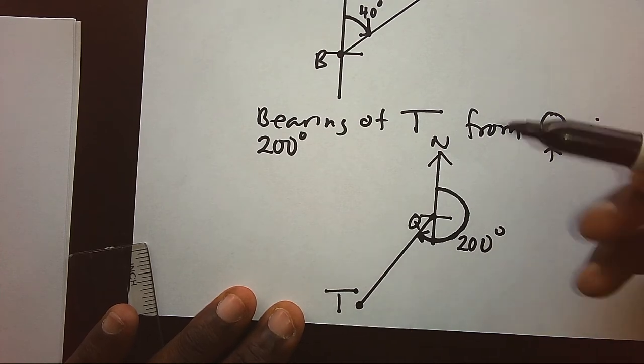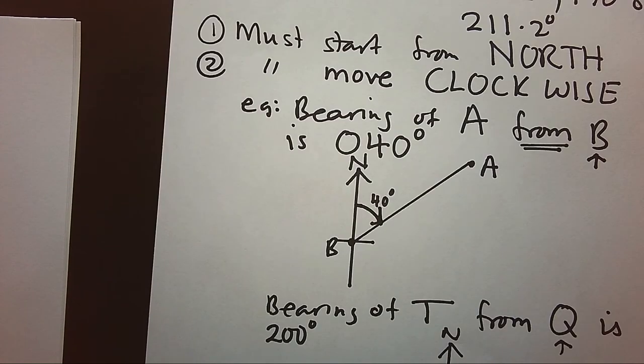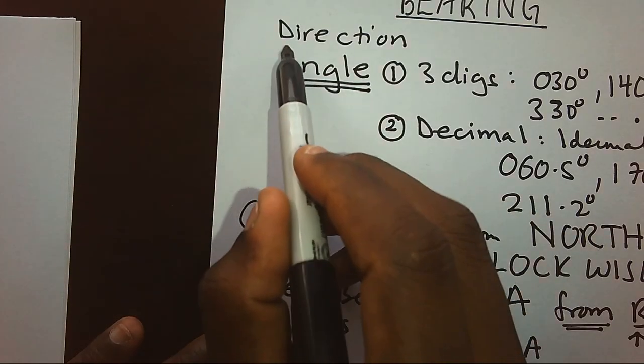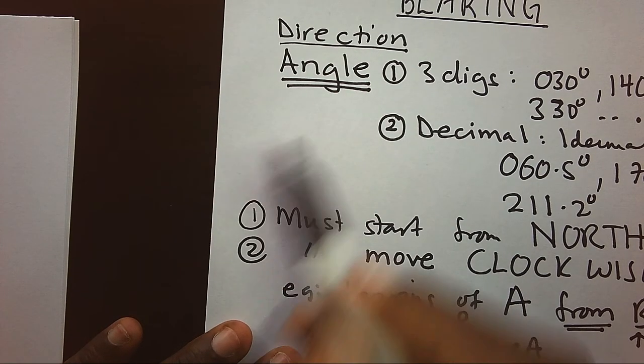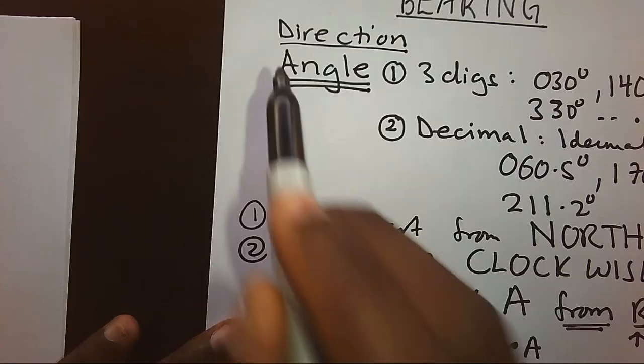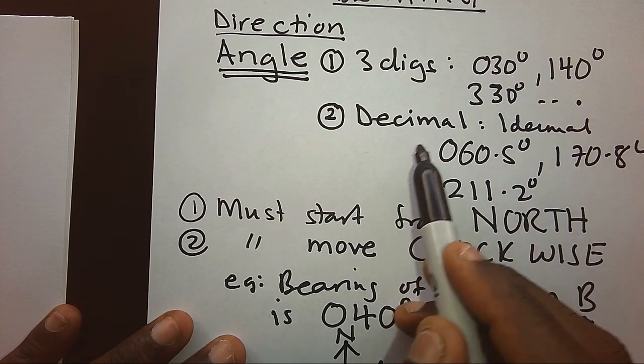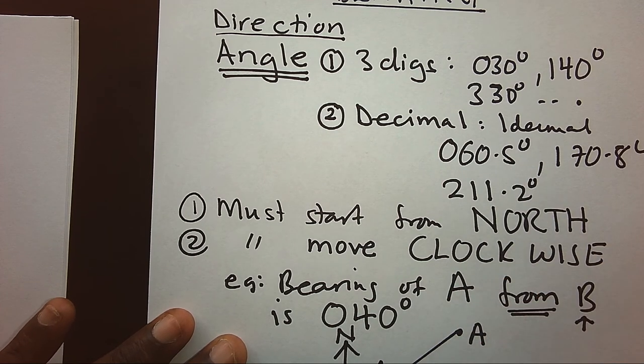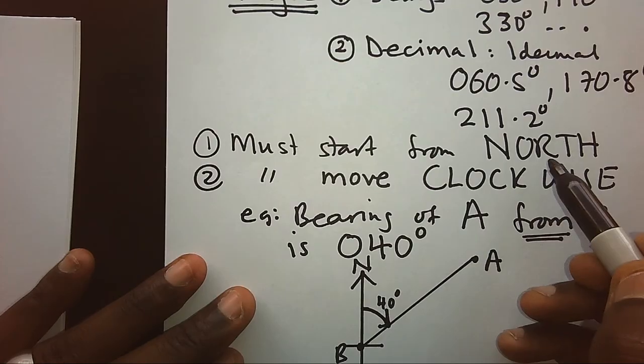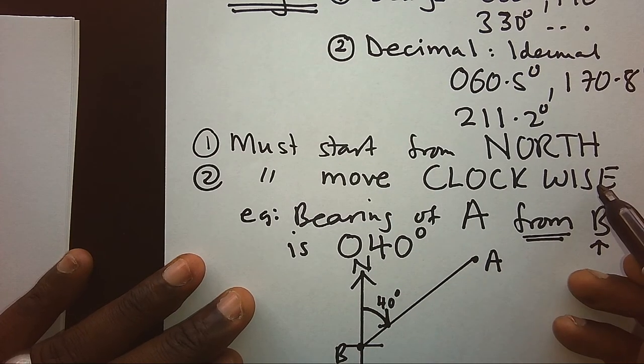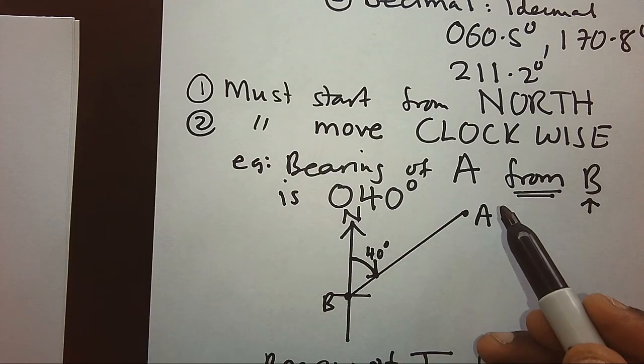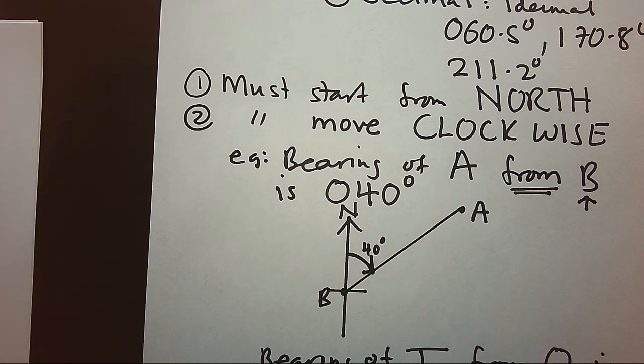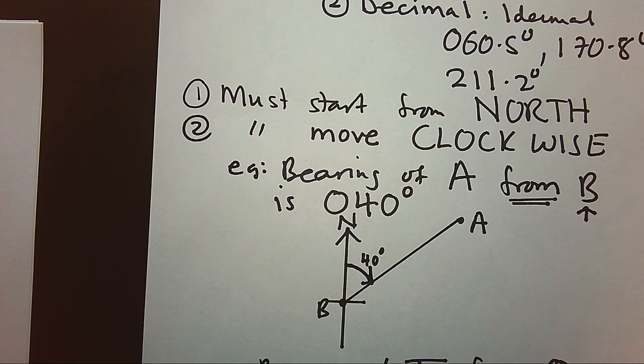This is the introduction to bearing and now we have seen examples on how bearing behaves. If we look again, we know bearing is direction. This bearing is measured using an angle. This angle must be three digits, and in case this angle has got decimals, we must keep only one decimal place. How do I measure this angle? We start from the north and we must always move in the clockwise direction. We saw our first example and our second example.